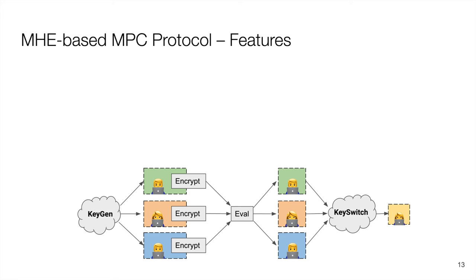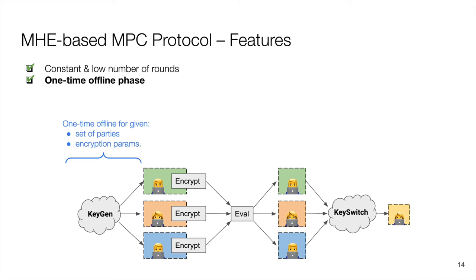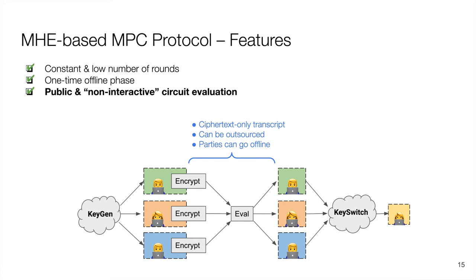Let's now take a step back and discuss the features of an MPC solution based on MHE. The first feature is the low number of rounds of communication. Only two rounds are required by the setup phase to generate the collective encryption and relinearization keys. Then one round of communication is required by the parties to provide their inputs, and one round is required to decrypt the final output. The second relevant feature is that, unlike LSSS-based MPC solutions, the offline setup phase only needs to be performed once for a given group of parties and for a given set of cryptographic parameters. After this is done, the parties can perform an unlimited number of iterations of the online phase, hence an unlimited number of circuit evaluations. This is an important property because the setup phase can be the most costly one when the circuit is small.